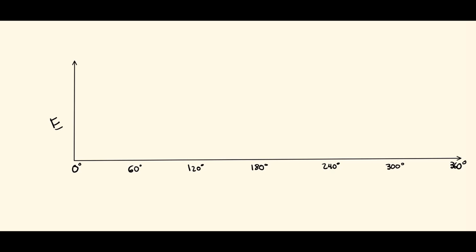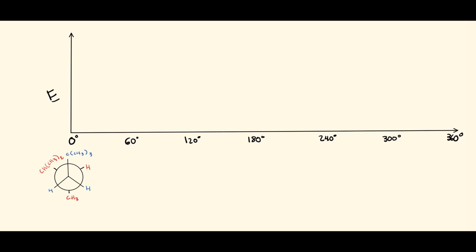We'll start at 0 degrees with the conformer we just drew. We're going to rotate the back carbon and leave the front the same, moving 60 degrees at a time. If we move 60 degrees right now, this group comes here, this comes here, and this comes here — so we go from a staggered conformer to an eclipsed conformer. This will repeat: staggered, eclipsed, staggered, eclipsed.